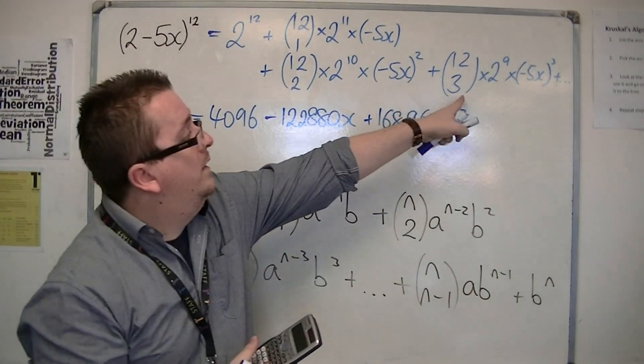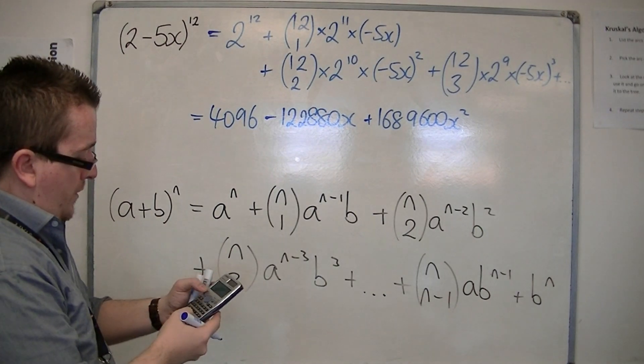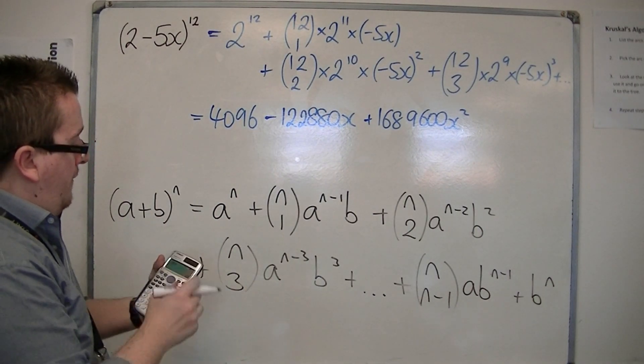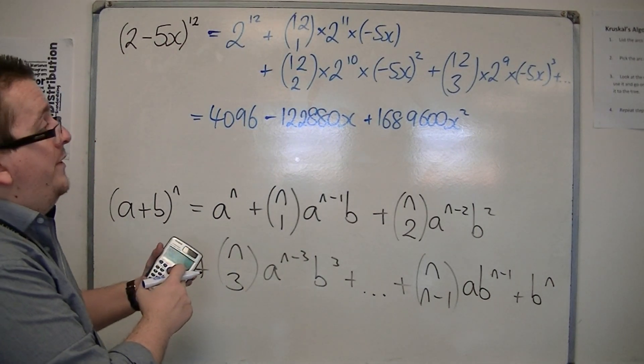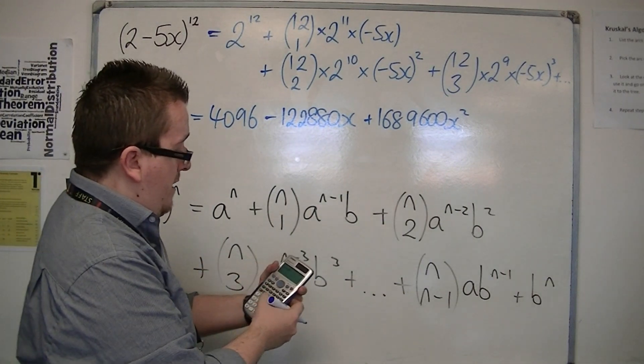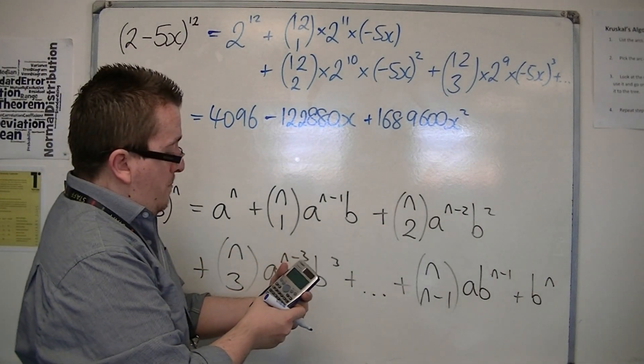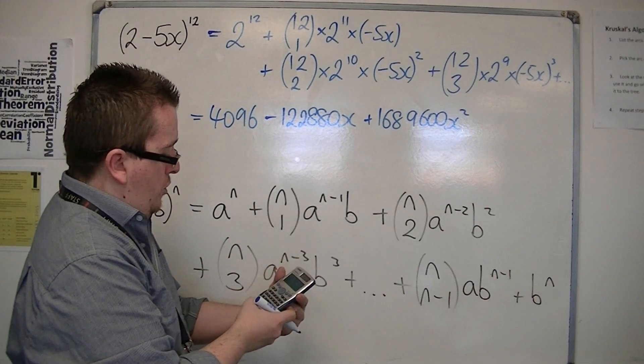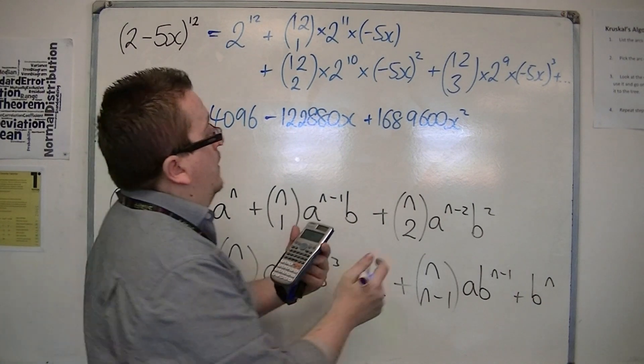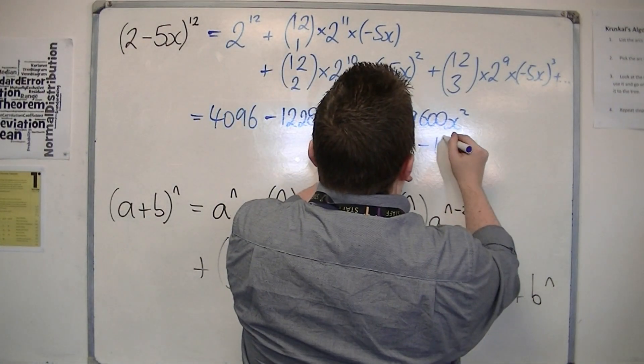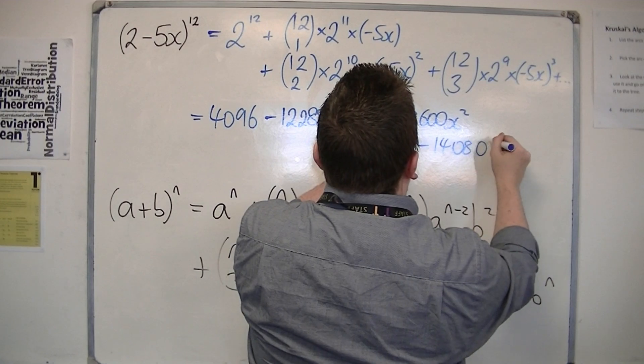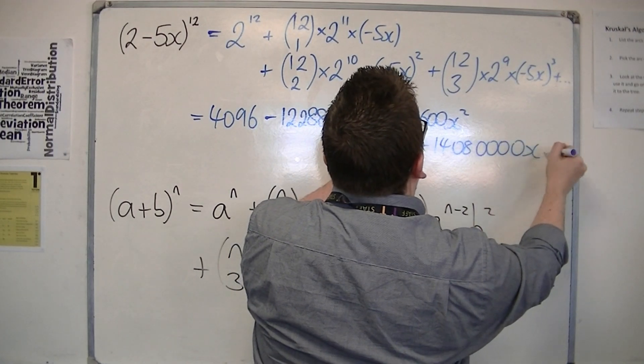And then finally, 12 choose 3. 12 choose 3. So, you should have 12C3. So that's probably 220, times $2^9$, times $(-5)^3$, which is minus 14,080,000$x^3$.